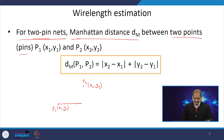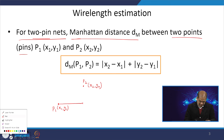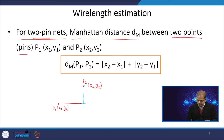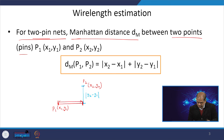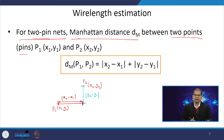In VLSI routing, we can place the metal either horizontally or vertically. The horizontal metal goes in one direction and the vertical metal in another. The distance is |y2 - y1| plus |x2 - x1|, and the sum of these two lines gives the estimate of wire length — this is the Manhattan distance. We do not calculate the Euclidean distance.